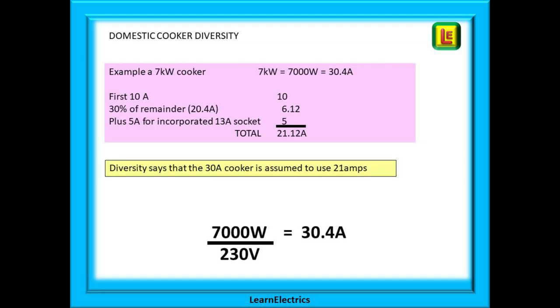Here is the actual calculation. We have a 7 kilowatt cooker. 7 kilowatts is the same as 7000 watts. 7000 watts divided by 230 volts gives us 30.4 amps of current. Take the first 10 amps, then 30% of the remaining 20.4 amps, which is 6.12 amps, and because we have an incorporated 13 amp socket, we add on another 5 amps. All that we need to do now is just add up the three numbers. This gives us a total demand for the cooker circuit of just 21.12 amps. This is a lot different to the 32 amp circuit breaker. Diversity says that the assumed demand is 21 amps.